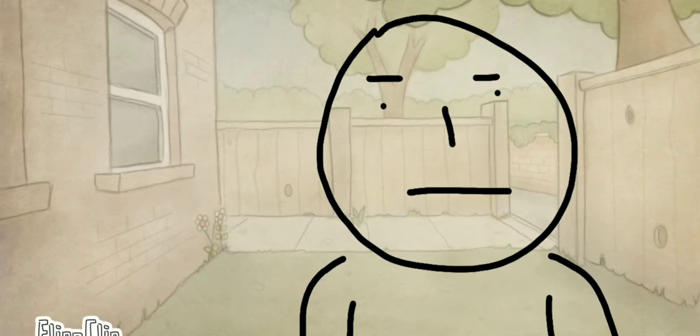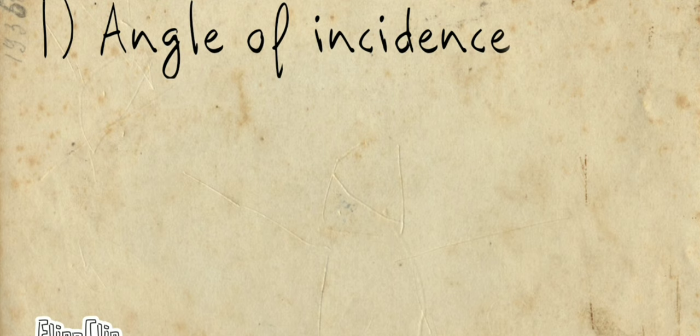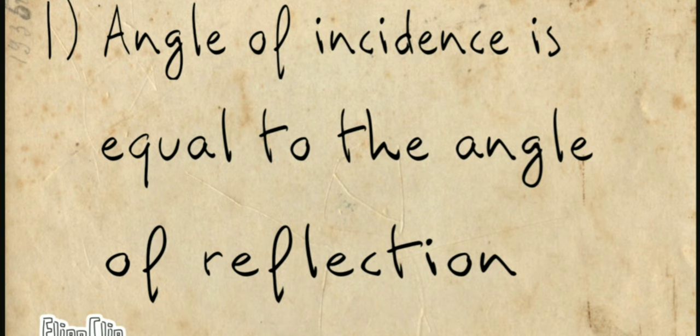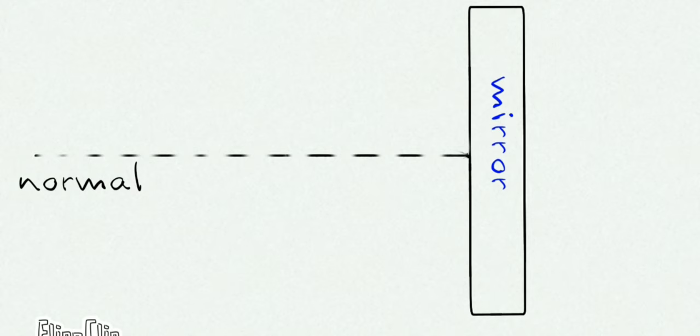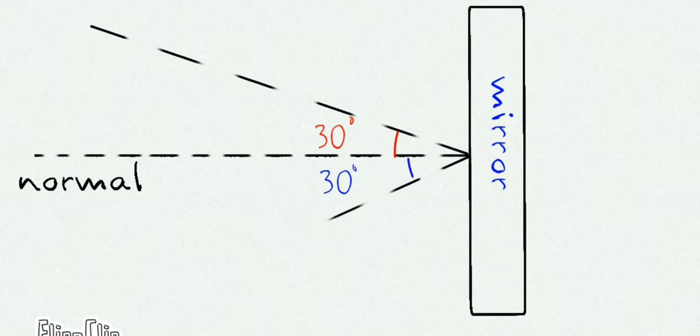With these six terms, we can now understand the laws of reflection. There are two laws of reflection. First: the angle of incidence is equal to the angle of reflection. The angle between the incident ray and the normal equals the angle between the normal and the reflected ray. If the angle of incidence is 30 degrees, the angle of reflection is also 30 degrees. If the angle of incidence is 60 degrees, the angle of reflection is also 60 degrees. The second law states: the incident ray, the normal through the mirror at the point of incidence, and the reflected ray all lie in the same plane.